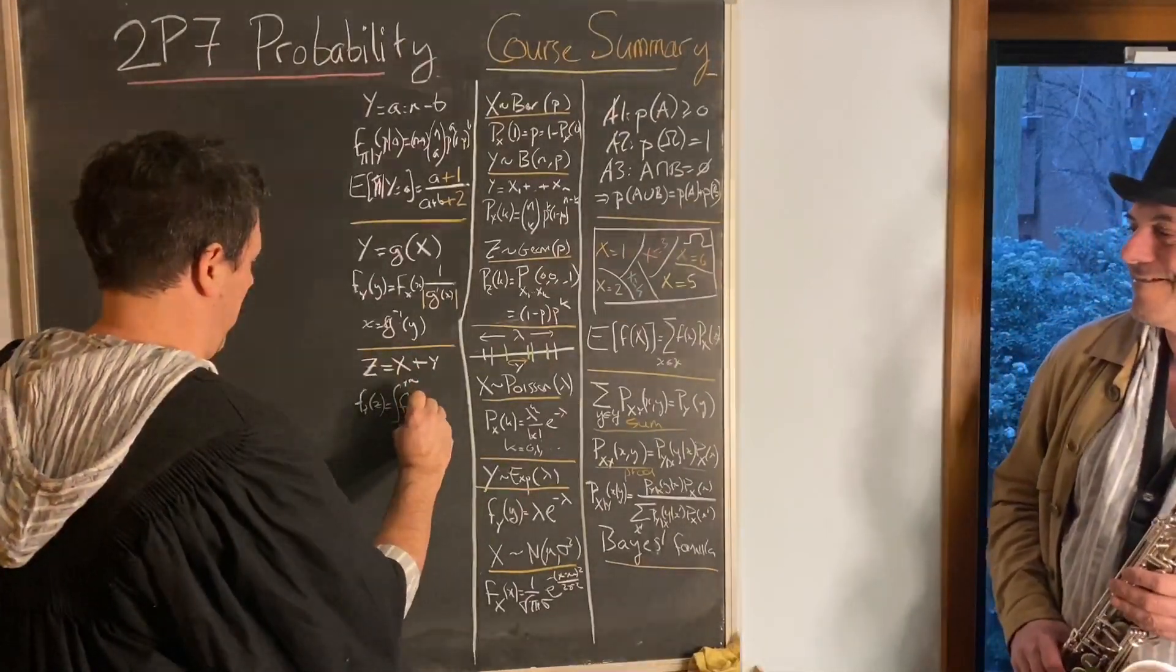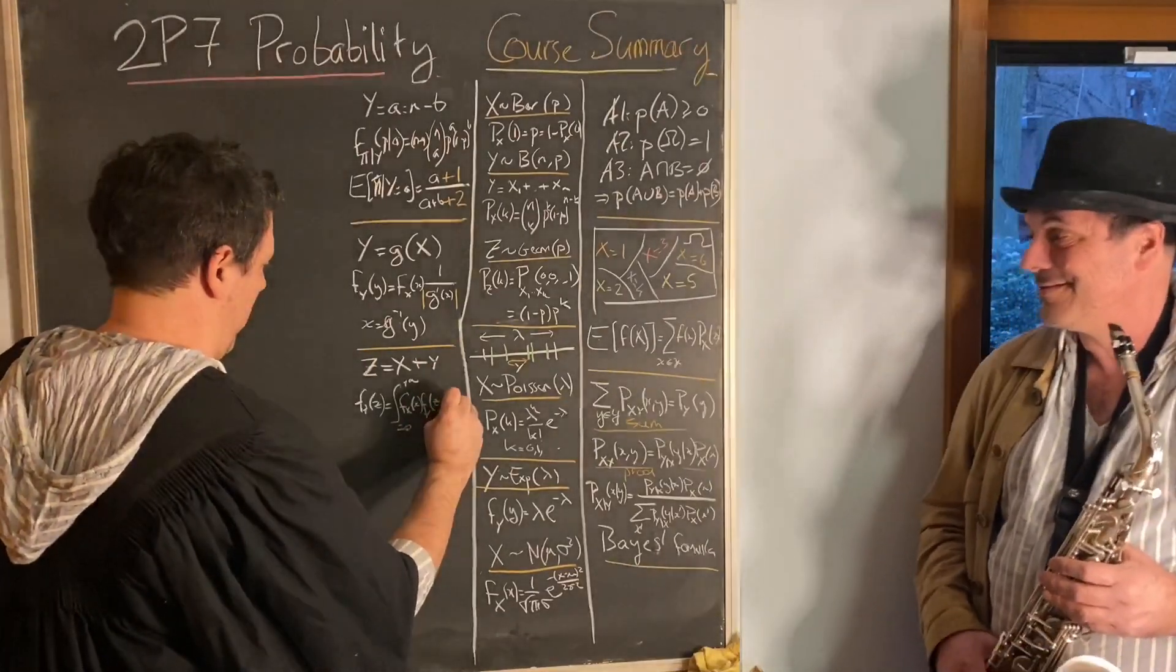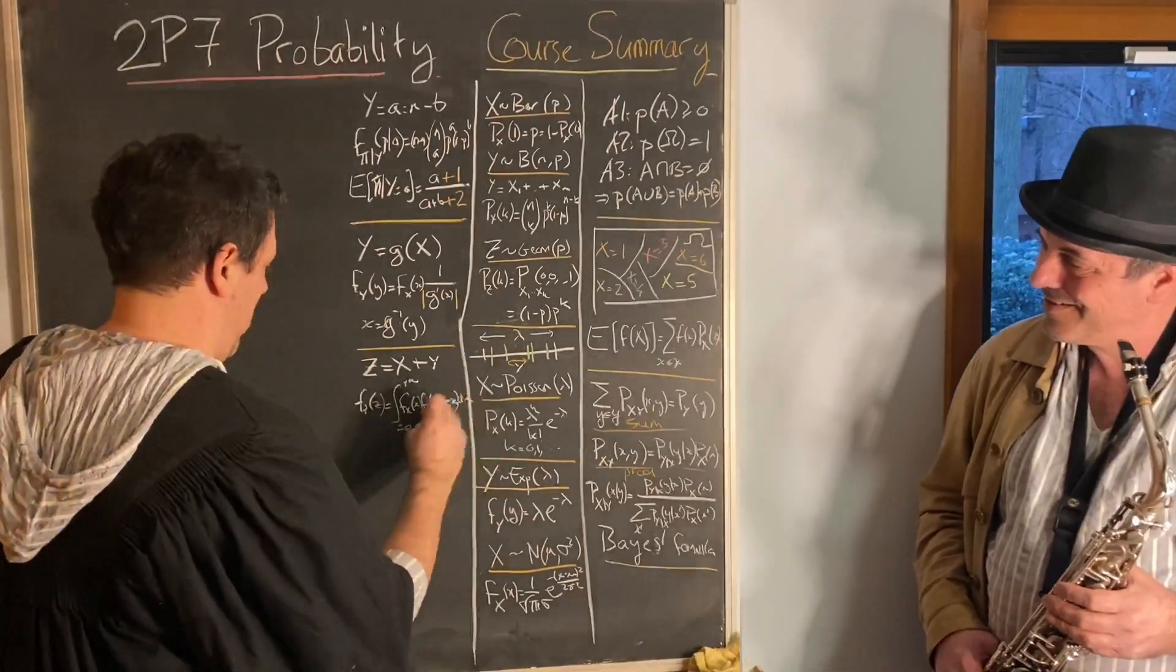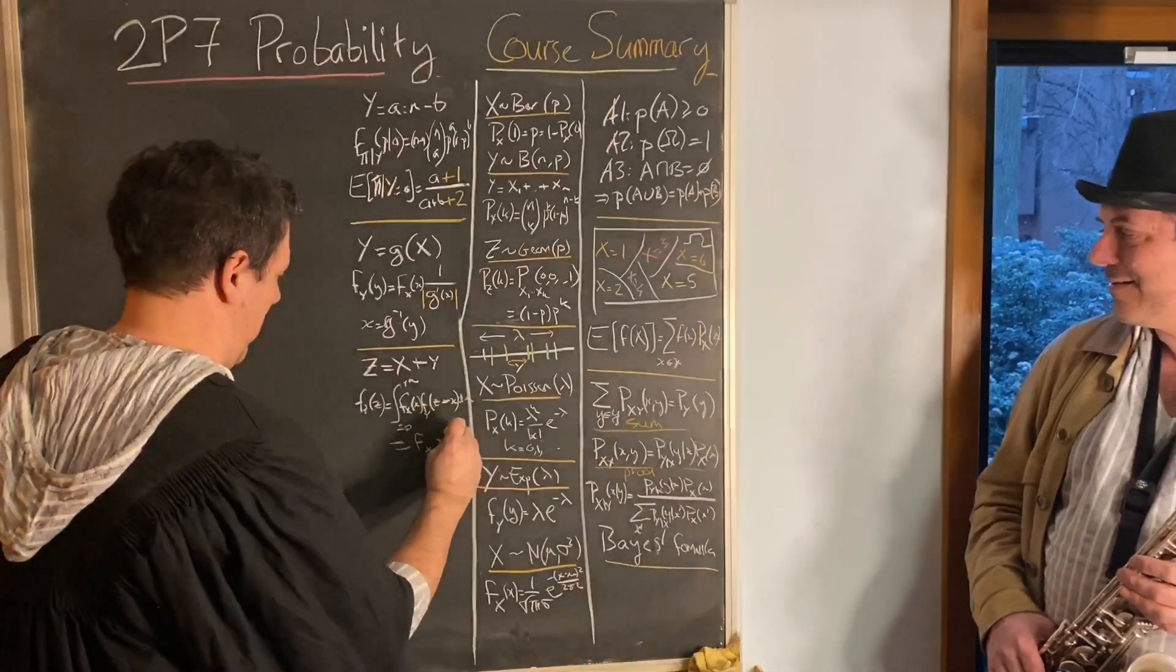If you take sums of variables, you want their probability. It comes out as convolution.